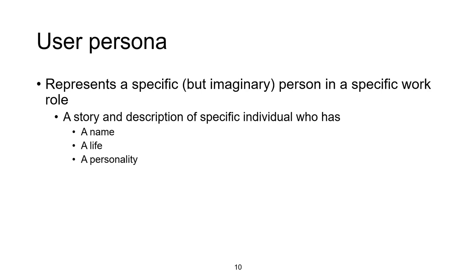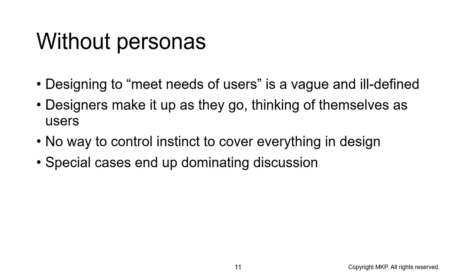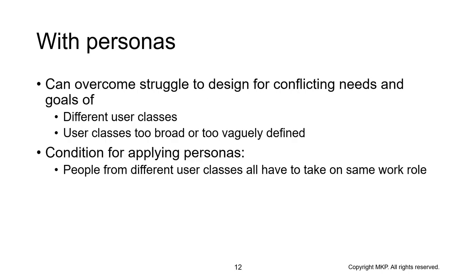Let us come to the next important topic, which is user persona. A user persona is an imaginary person which has specific characteristics and a specific work role. When I say specific characteristics, it means that a persona has a name, life and personality, etc. If we do not use a persona while designing, sketching or writing a storyboard, we will not know who the users are or what skills they possess. Designers would make it considering themselves as the user, so the designing could be vague or ill-defined. With persona, the struggle of designing for conflicting needs and goals of different user classes can be mitigated.